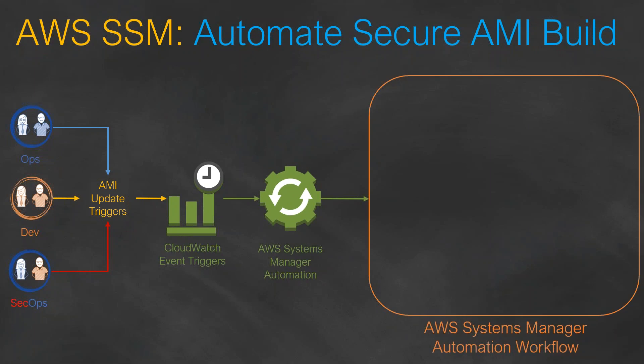In our case, CloudWatch event triggers will trigger your SSM Automation. This automation has its own workflow called an SSM Automation Document. Within the document we can have a lot of things happening. The first step of the automation document is to take your vendor's base AMI — whether that's Windows 2016, Red Hat 7.5, Amazon Linux, or any other flavor — and create an instance out of it, just like the normal process, but the automation document handles all the steps.